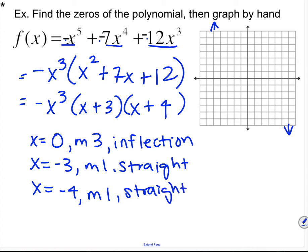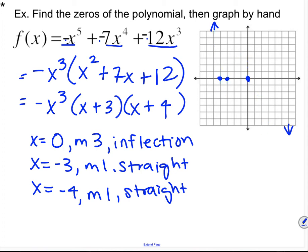Instead of using a sign chart, I typically like to think of it logically, but you can use a sign chart if necessary. I'll plot my zeros at 0, negative 3, and negative 4. I know my end behavior because it's a negative odd function. The inflection occurs at (0, 0) and the rest go straight through. So the graph comes down, straight through negative 4, back up, straight through negative 3, slides through at 0 (that weird cubic inflection shape), and then down.